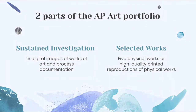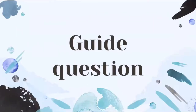You will also need to do some writing. For Sustained Investigation, for each image you need to write about materials, processes, and size. For Selected Works, you need to write about ideas visually evidenced, materials used, and processes. For your Sustained Investigation, you should make your own guiding question, which will be your topic — it can be anything you want. For example, something like 'What if the objects were an animal?' You can use any idea that you want to do as a topic.